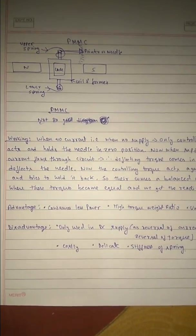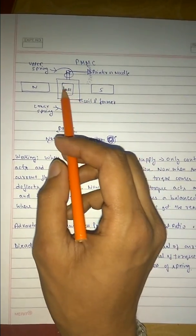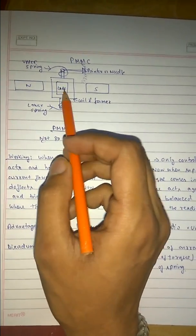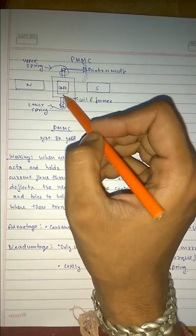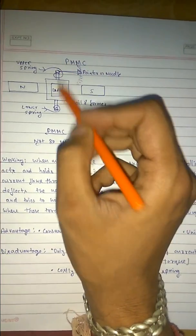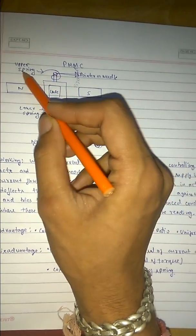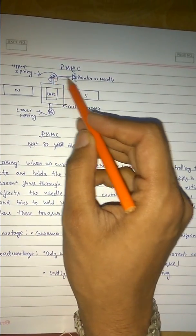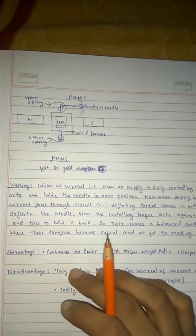PMMC - Permanent Magnet Moving Coil. As you can see in the diagram, there are two poles: North Pole and South Pole. This is our former and the coil, having the coil in between. Through this there is a cylinder-shaped thing which is attached at the two ends with springs. This is the upper spring and this is the lower spring. And this is our pointer.